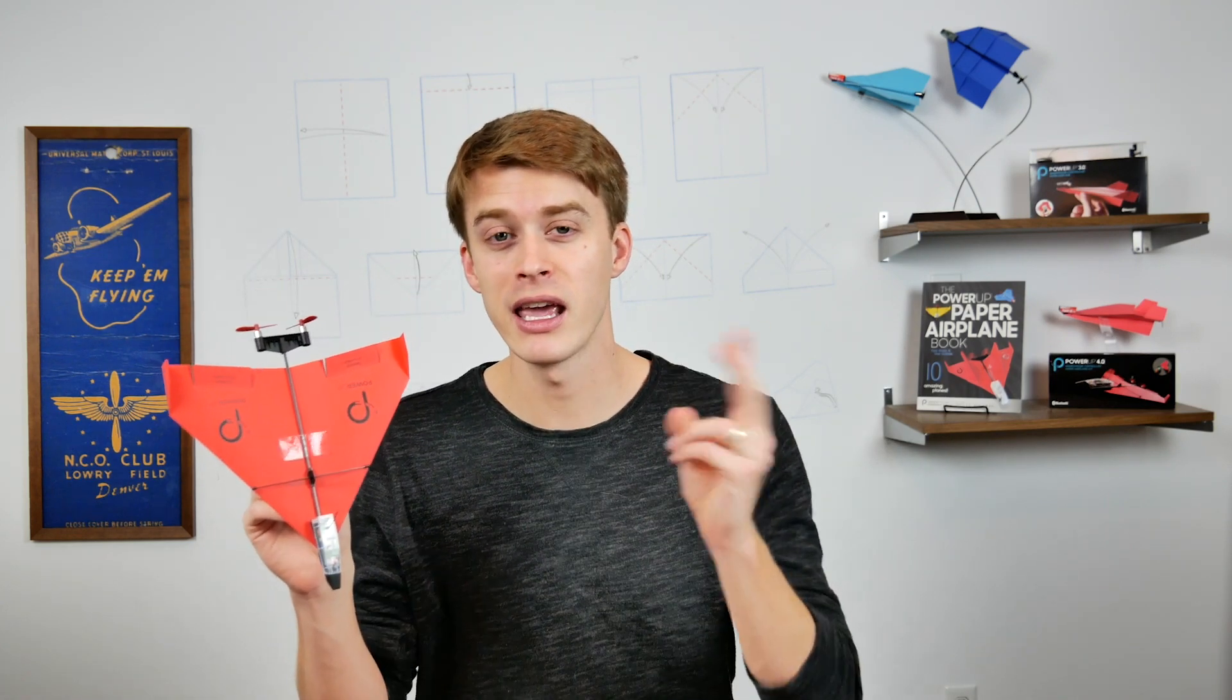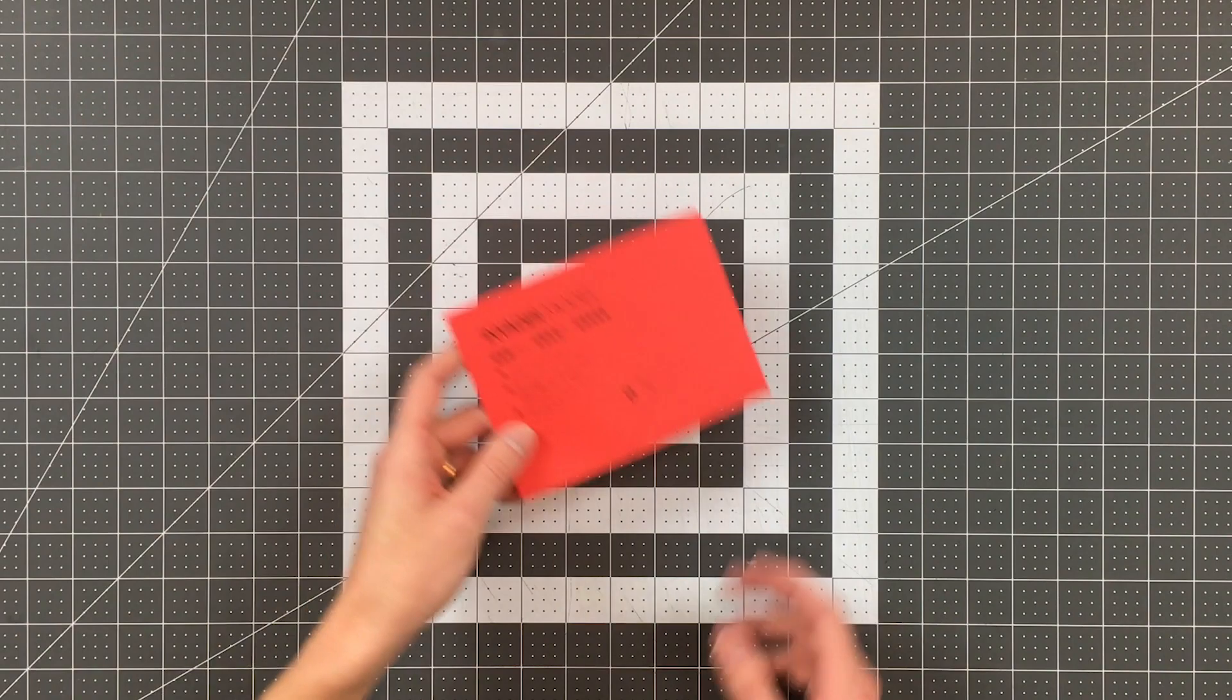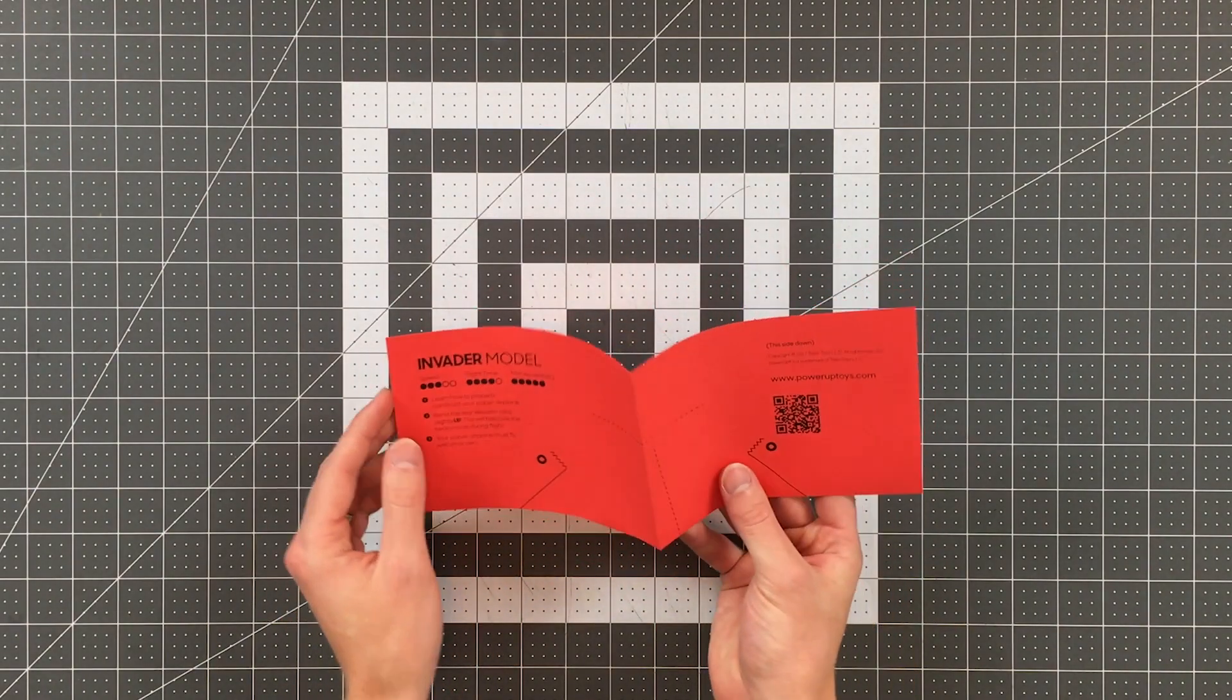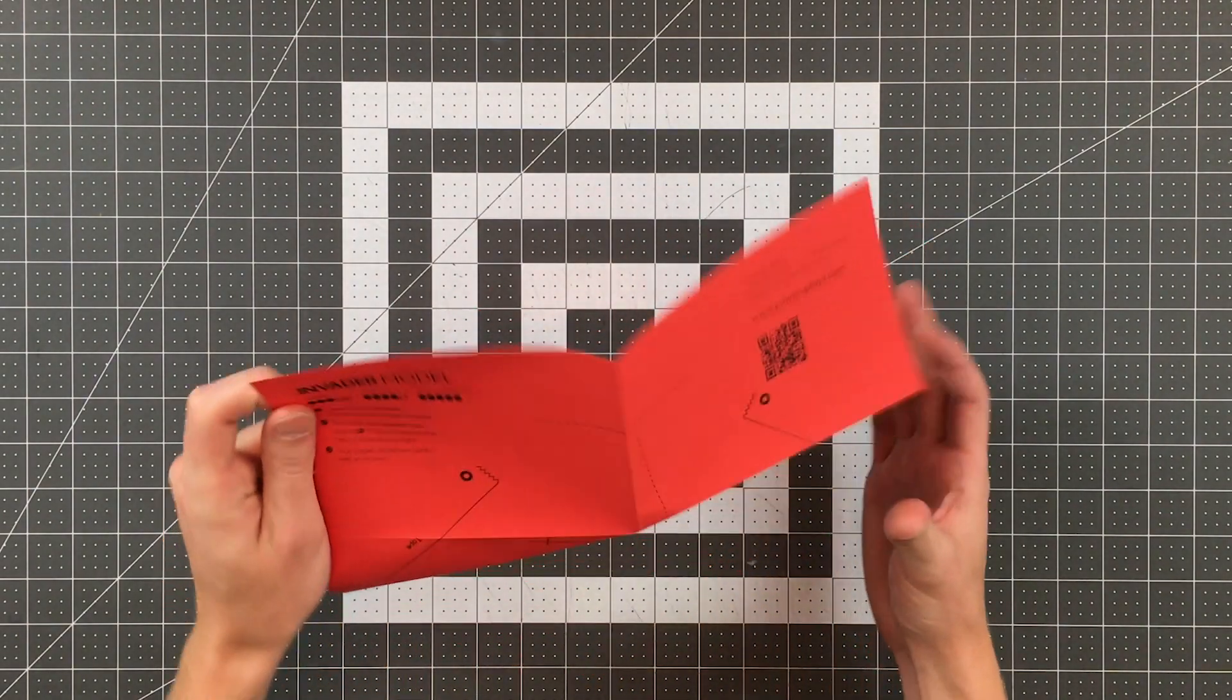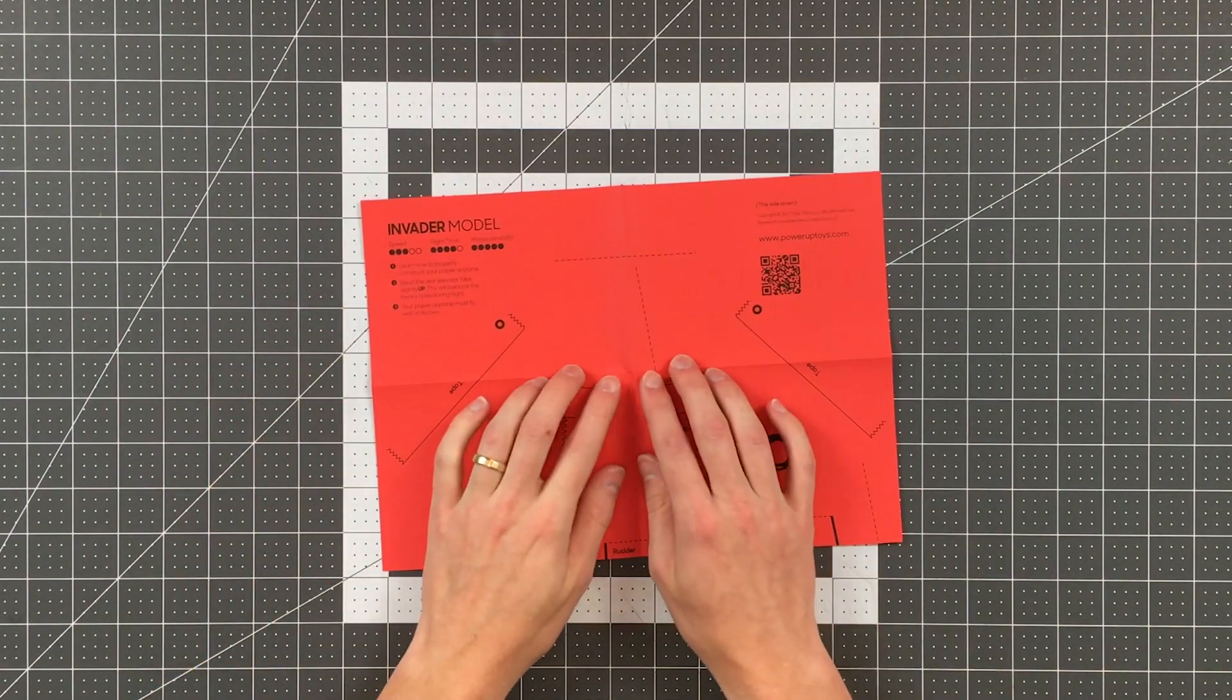After you've confirmed that your power-up module will turn on and will connect to your phone, it is of course time to make your airplane. Now there are many planes that will work with the power-up modules, but I recommend starting with our Invader model because it is easy to fold and easy to fly. And you'll see that the power-up modules even come with paper for folding Invader. If you'd like a full tutorial, click on the card in the top right corner.